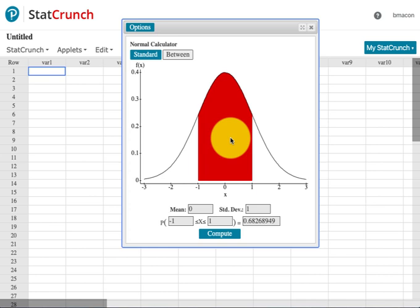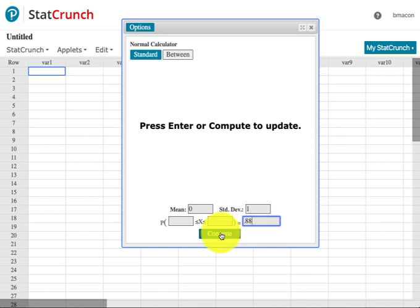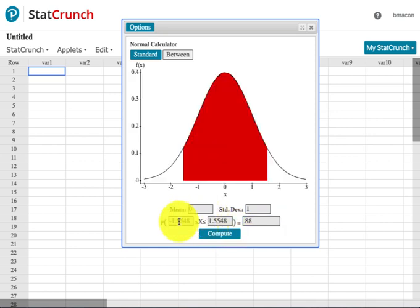That's why I talked about if alpha was 0.12, we really have 0.88 in the middle. What I would do is type 0.88 for what needs to be in the middle, and my critical values are given right here.